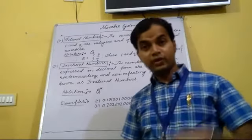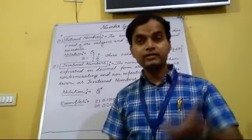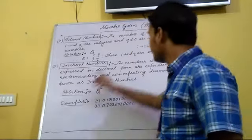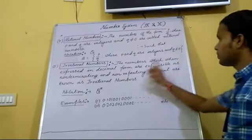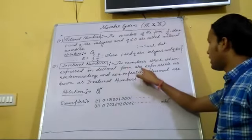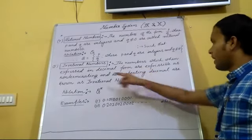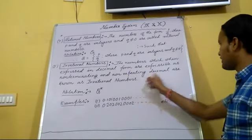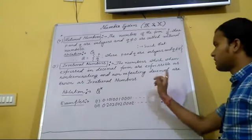Next, we are going to discuss about irrational numbers. The numbers which when expressed in decimal form are expressible as non-terminating and non-repeating decimal are known as irrational numbers.